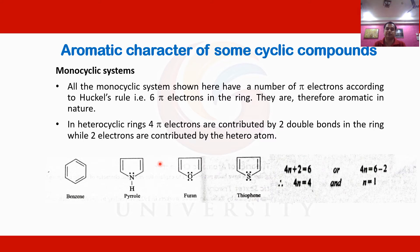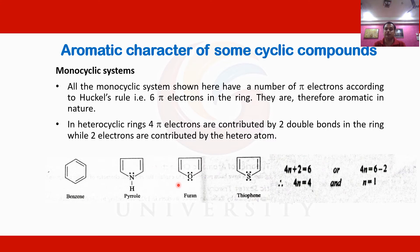Similarly, if we have six electrons in pyrrole, furan, and thiophene, they must also be aromatic. In pyrrole, there are two double bonds giving four pi electrons, while the remaining two electrons come from the lone pair on nitrogen, oxygen, or sulfur, which also contribute to the delocalization of the pi electron cloud above and below the ring without interference. That is why pyrrole, furan, and thiophene are also aromatic.